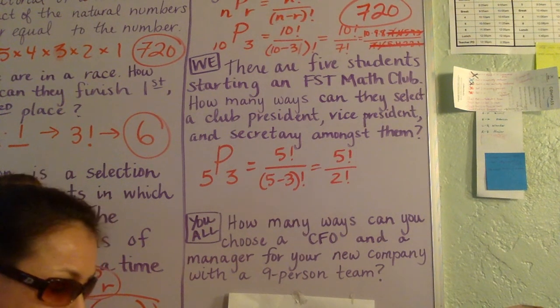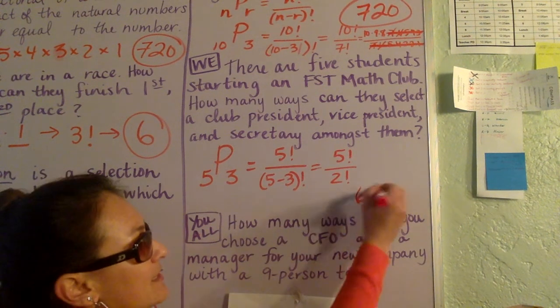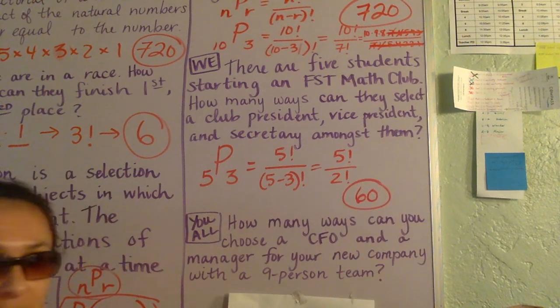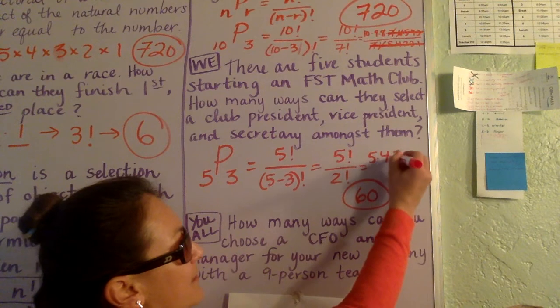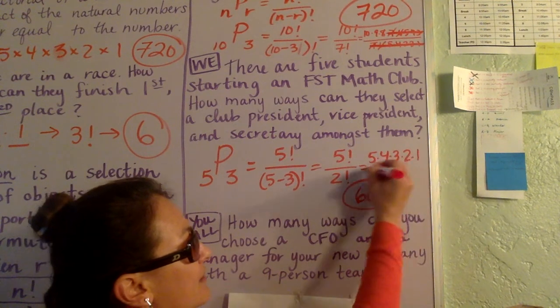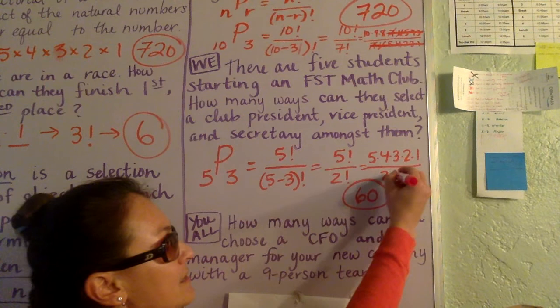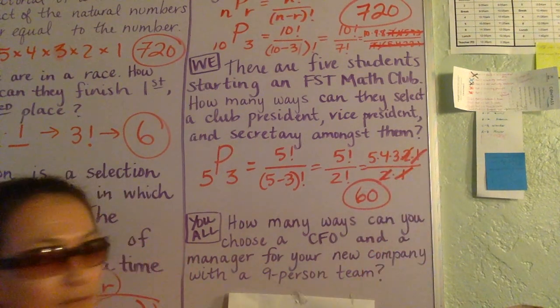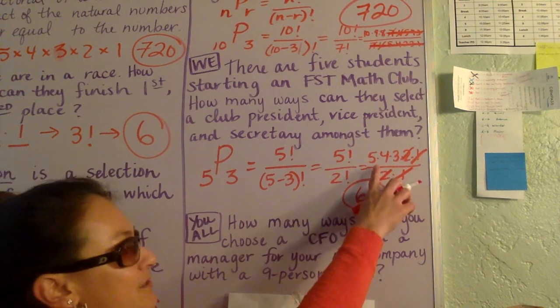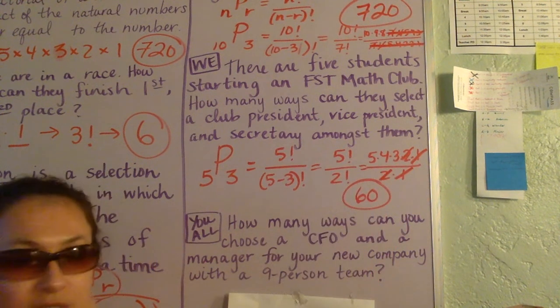When you go ahead and punch that out, I think you will get 60. And I just want to put how that works out if you're working without a calculator. So 5 factorial is this, 2 factorial is this, this can simplify, that can simplify, and so the answer is really 5 times 4 times 3, which is 60.